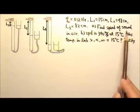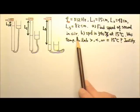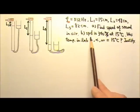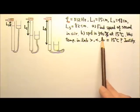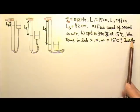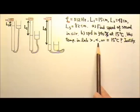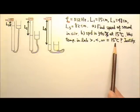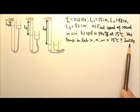Part A: Find the speed of sound in air using these data. Part B: We know that the speed of sound in air is 340 m per second at 15 degrees Celsius. Was the temperature in that lab higher, lower, or equal to 15 degrees Celsius? Justify your answer.